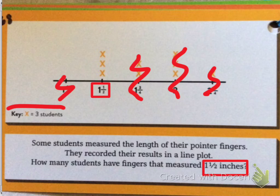Now, we have to pay attention to the key. The key is where you can get confused because this is telling us each x is 3 students. So that means you need to be skip counting by 3s. So the answer is not 3.